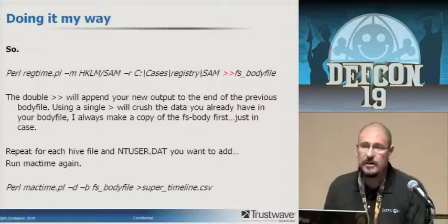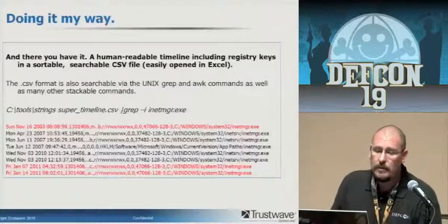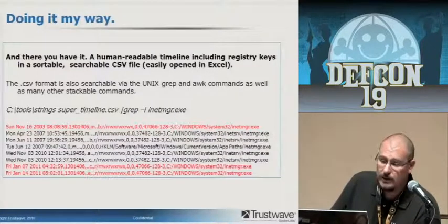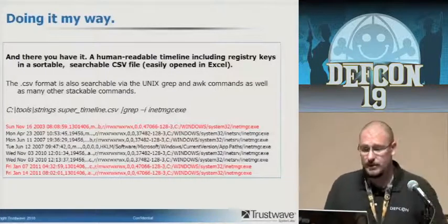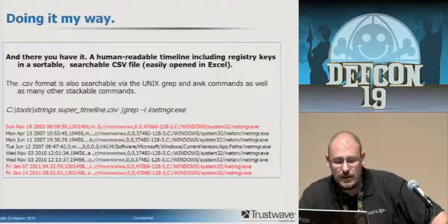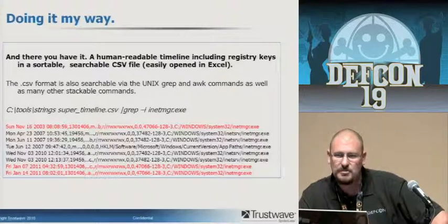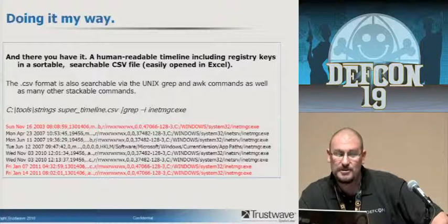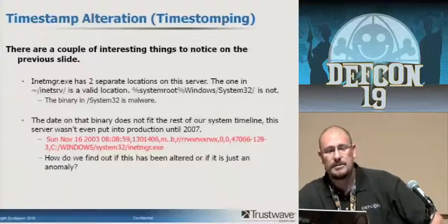Here's a nice example of what it looks like in text when you do a grep search against this — a really nice format. Remember I said we'd see that INET manager again. There are several timestamps here, and you see one in 2003 — which is really odd because this machine wasn't even built until 2007. You also see two paths: system32\inetmanager and system32\inetserve with the same executable name. Definitely kind of odd.